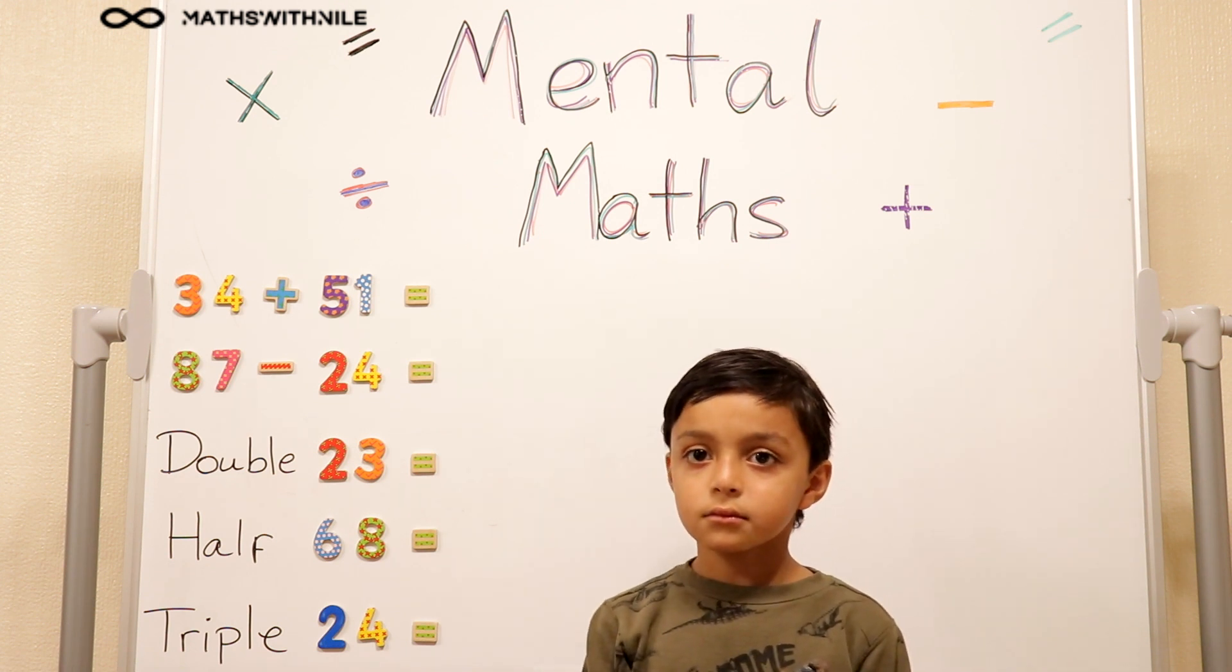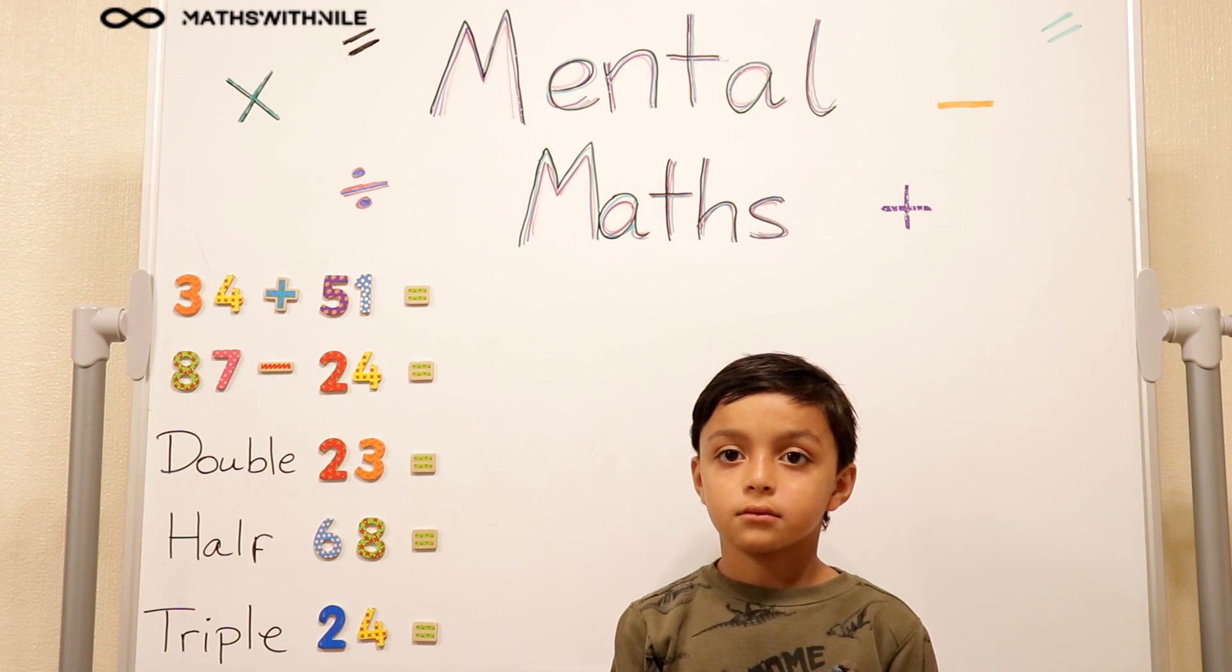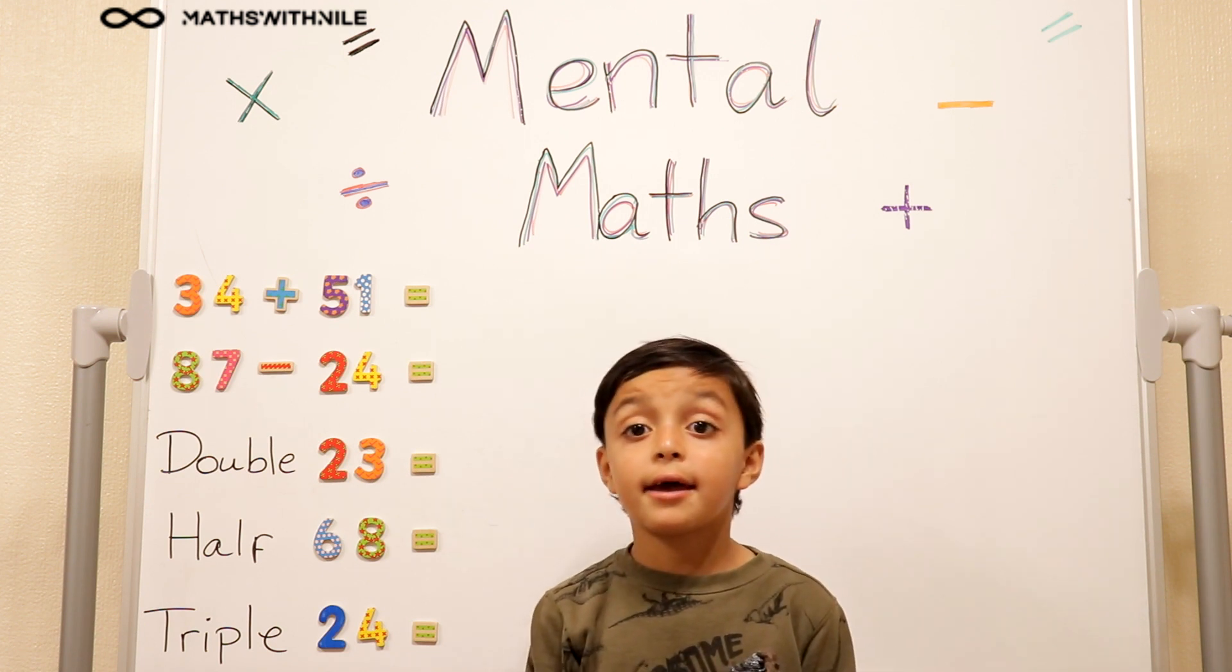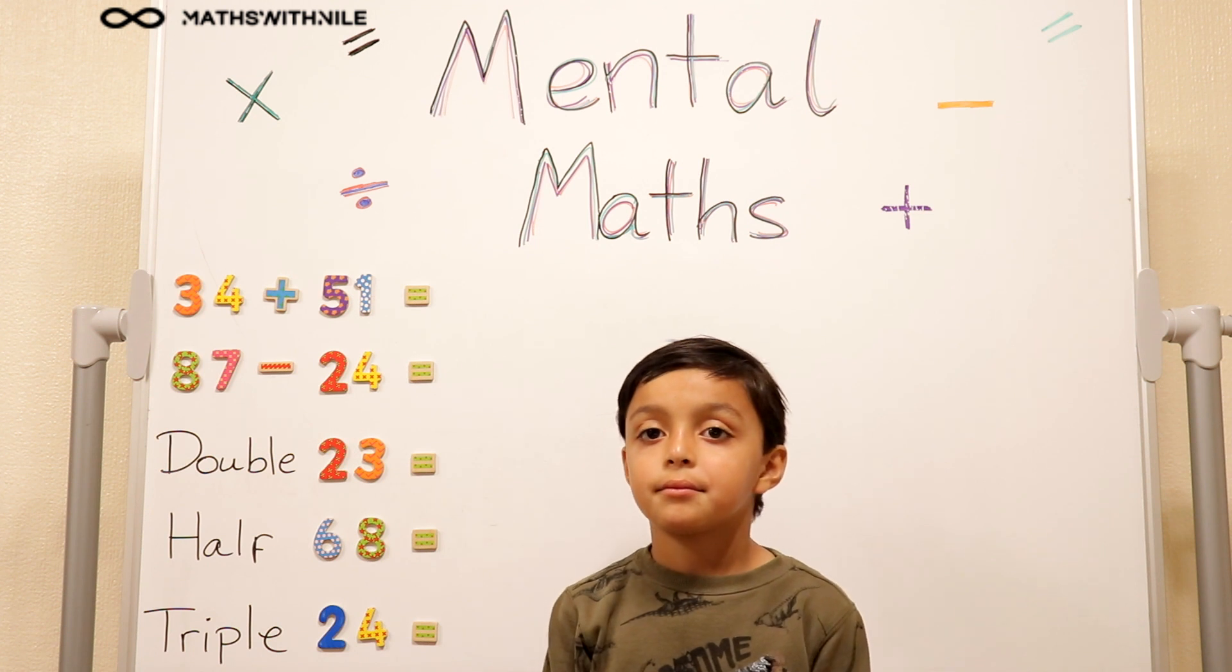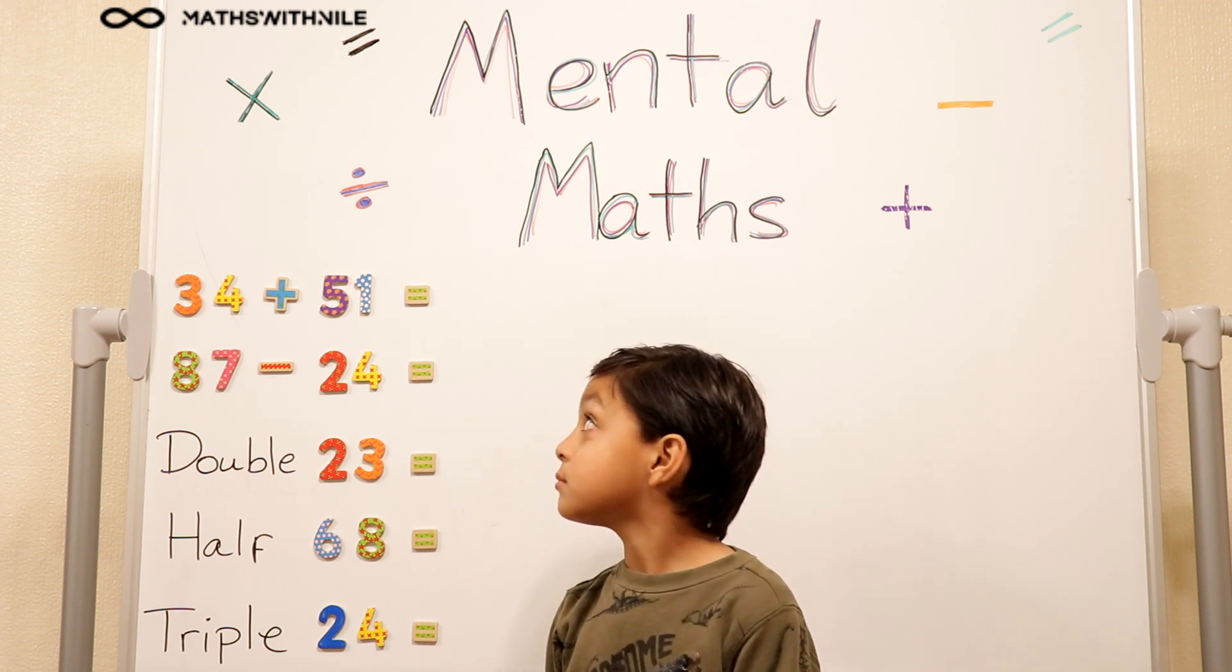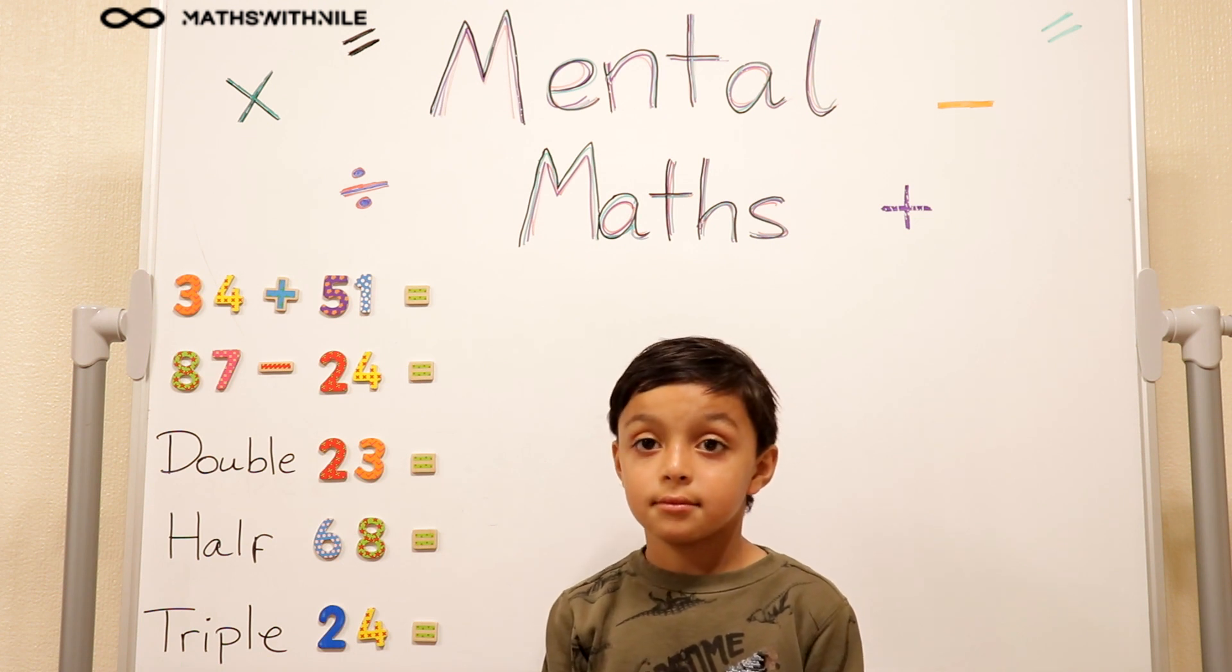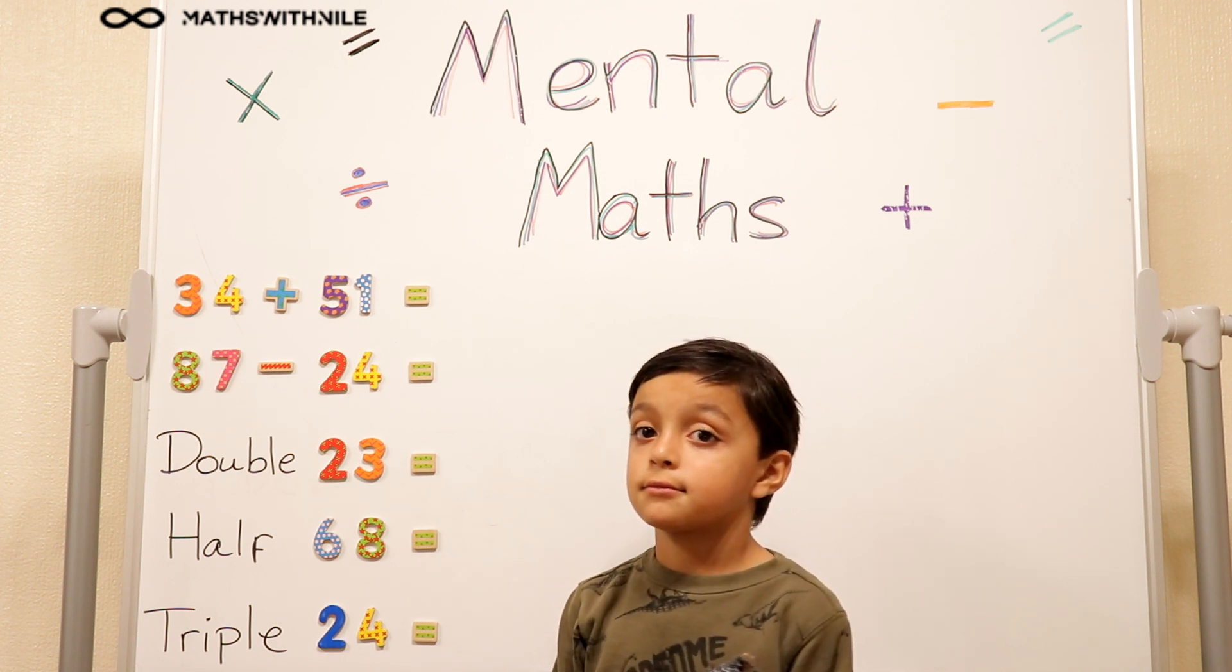Good, so you said 34, that means the value of the 3 is what? 30. 30 because it's 3 lots of 10. Very good. And 51, the value of the 5 is 50 because we have 5 tens. So how are you going to work that question out quickly?